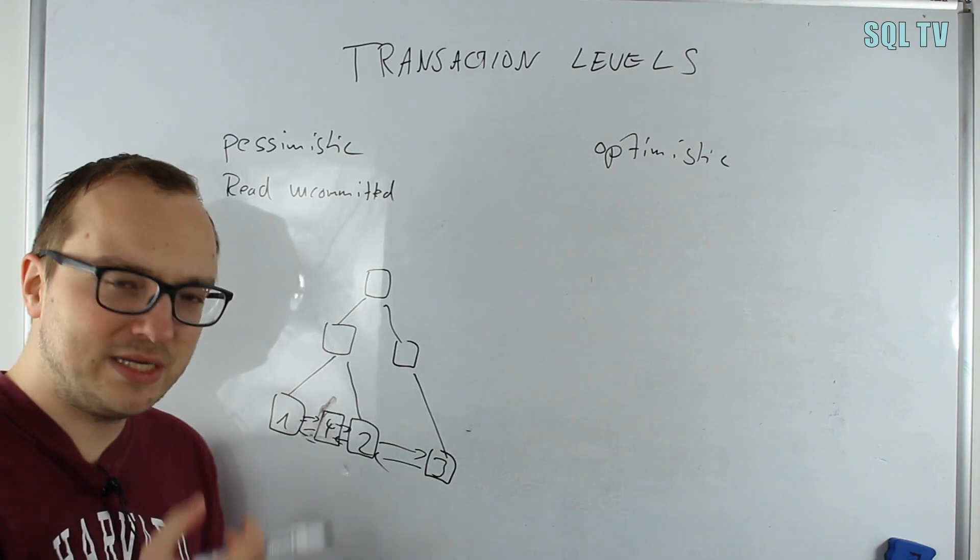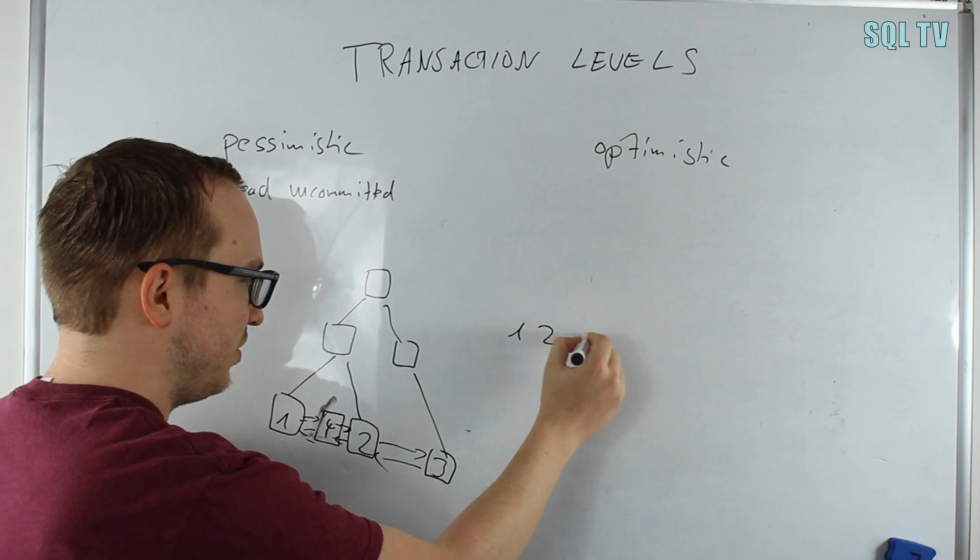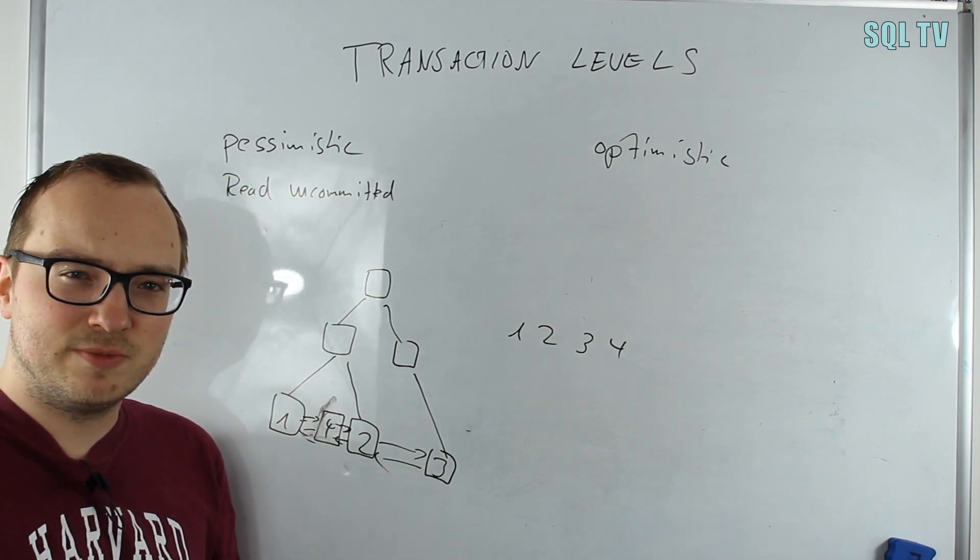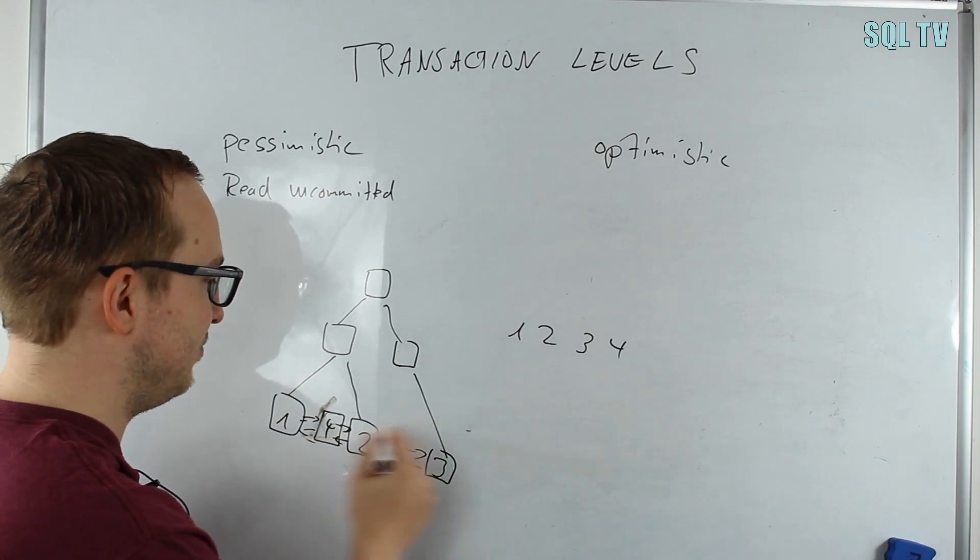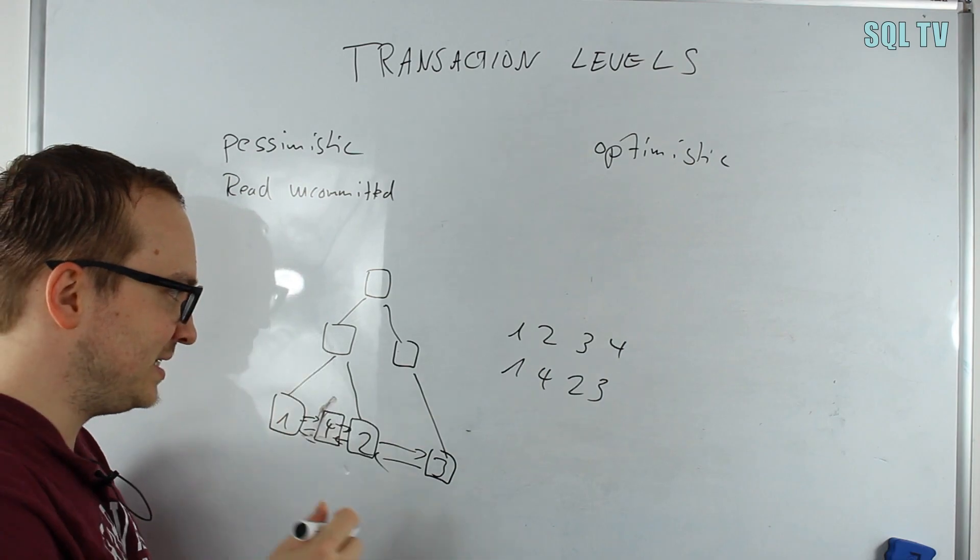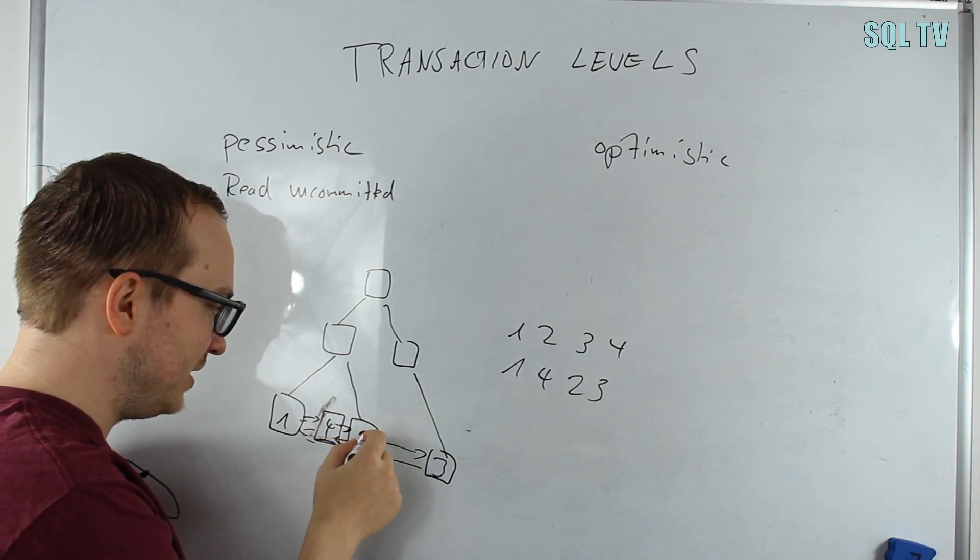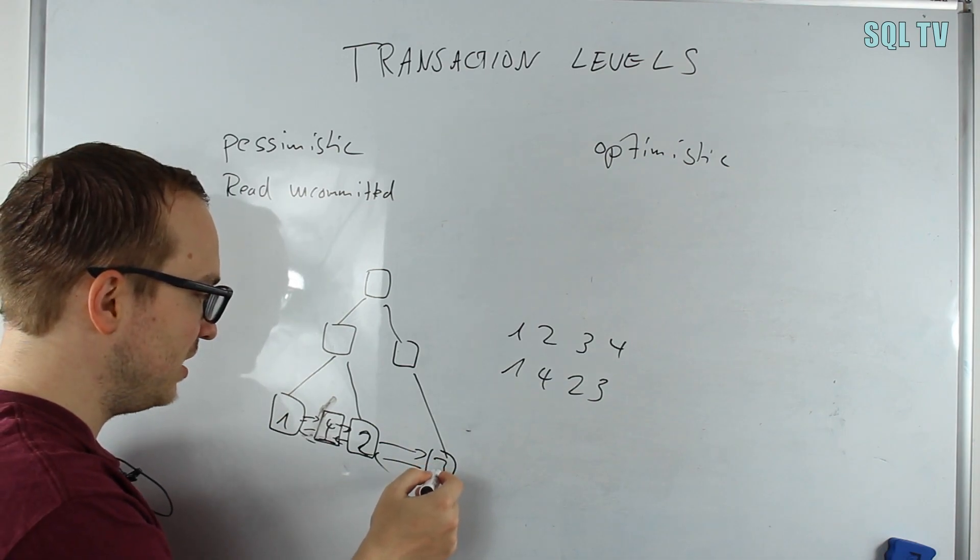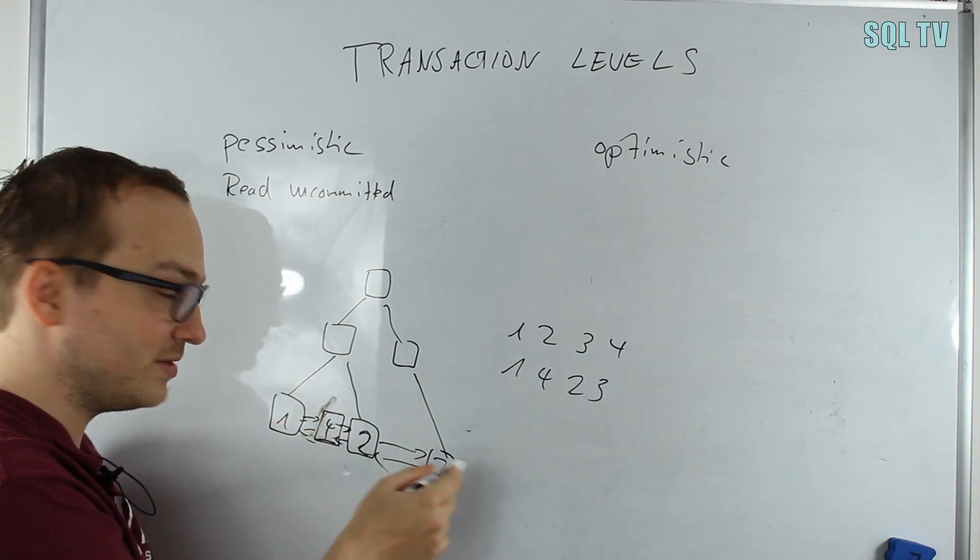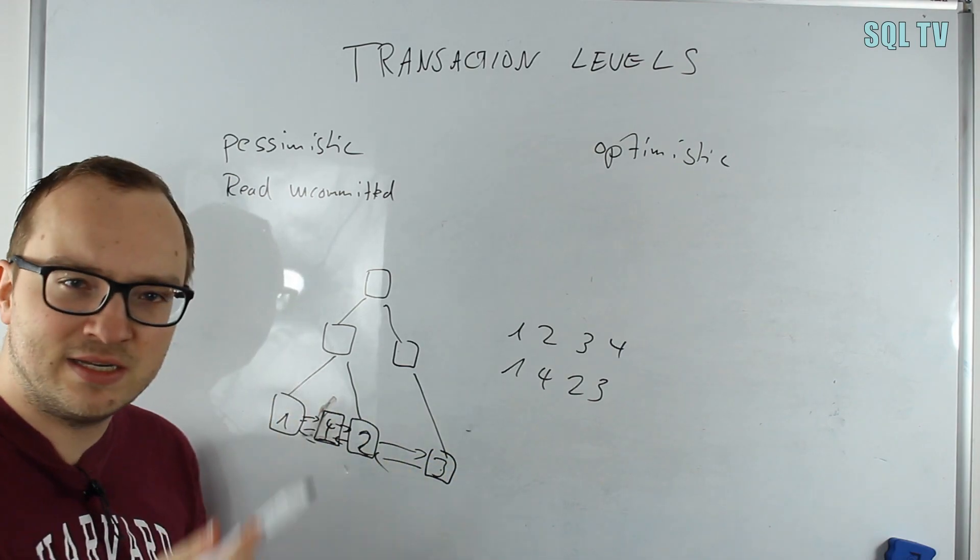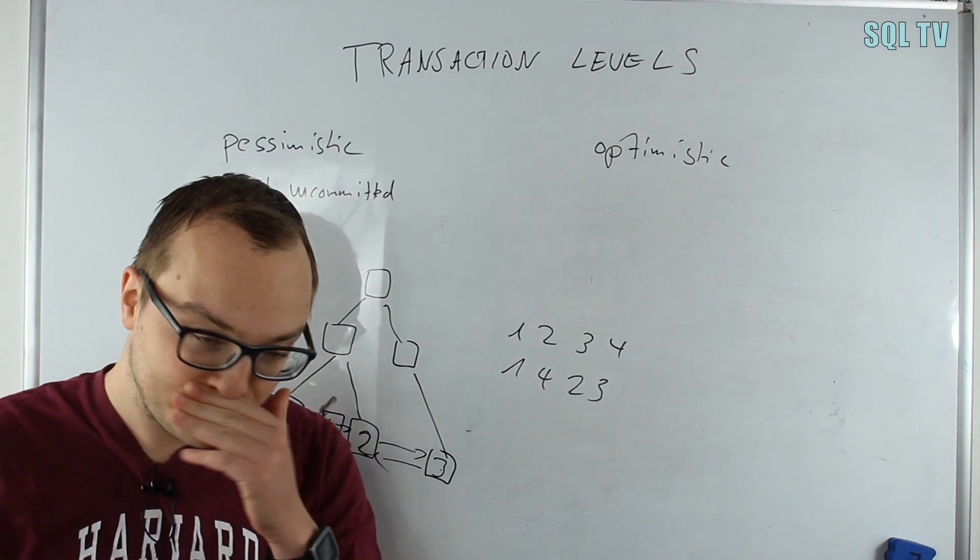The problem is your server can table scan in two different ways: allocation order (one, two, three, four) or logical order (one, four, two, three). Let's assume we do one, four, two, three and we finish reading four. While we're starting to read two, another transaction moves a row from three to one—we would never read this row. Or vice versa, we finish page one and another transaction moves the row from one to three by updating the key. We would read this row twice in the end. It can lead to undesired behavior, so be careful.